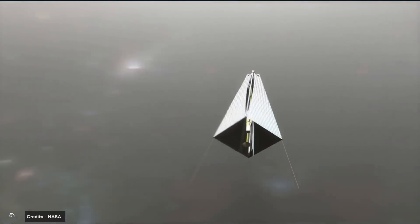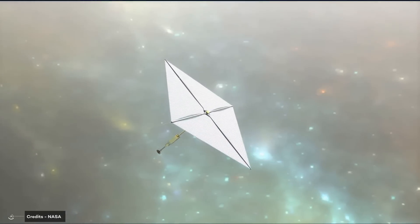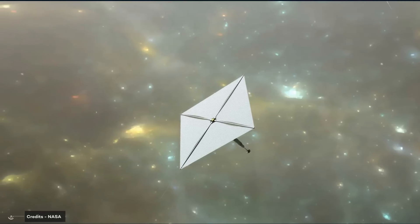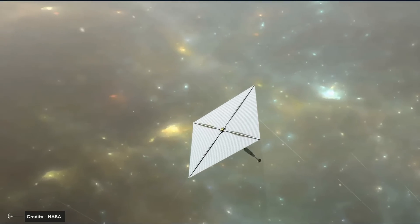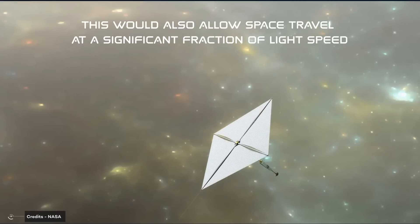Actually, scientists had an idea. Knowing that solar light can accelerate our lightweight sail, what about trying to build a whole system of light beamers and light sails in order to reach other worlds? This would allow space travel at a significant fraction of light speed.